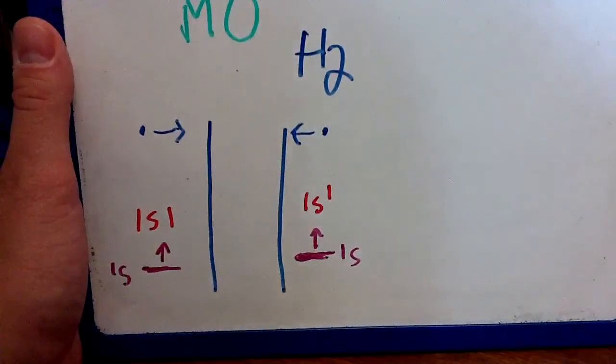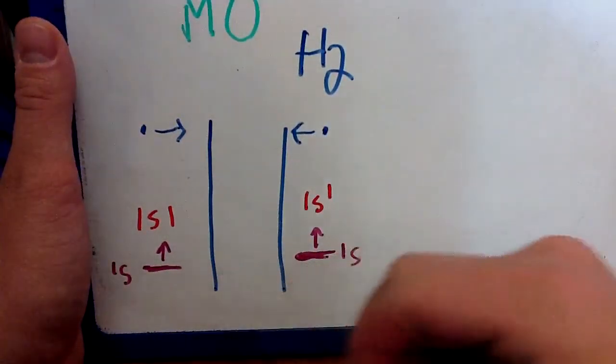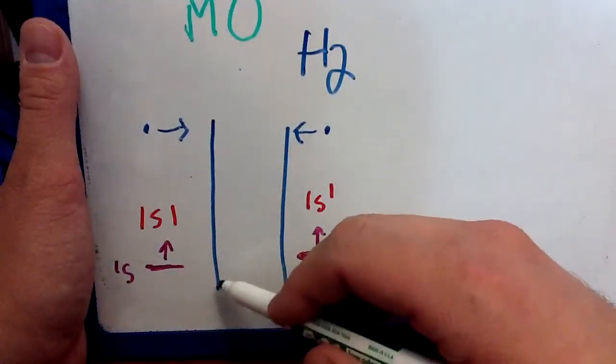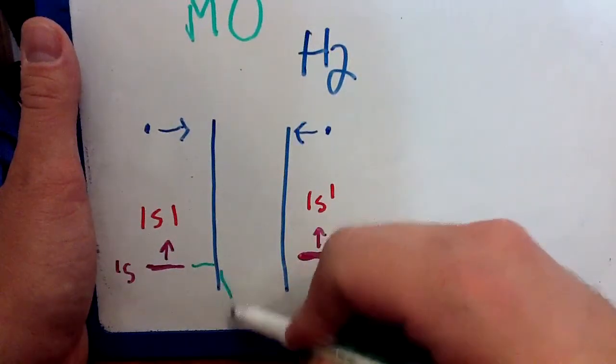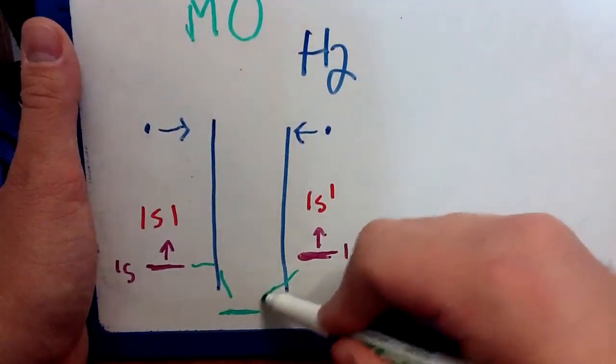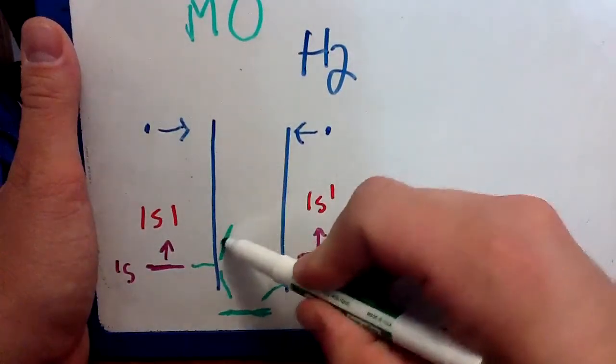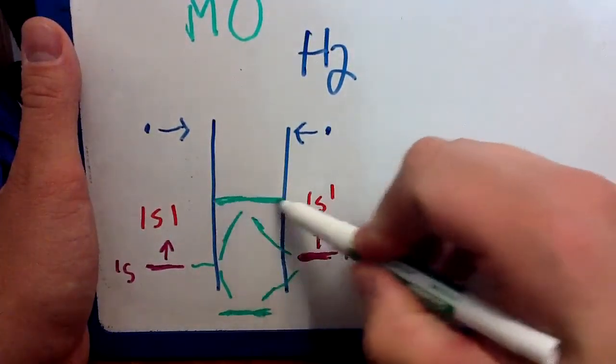Now when we combine them, when the wave functions combine over here, I can get one of two different types of orbitals, what we call molecular orbitals. I can get an orbital of lower energy, so these are going to come down here and they're going to combine, and I'm going to have an orbital down here of lower energy, and I'm going to have an orbital up here of higher energy.